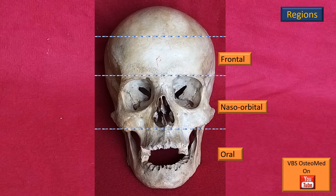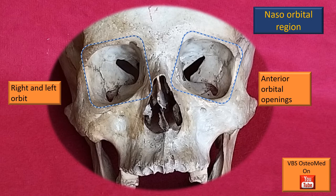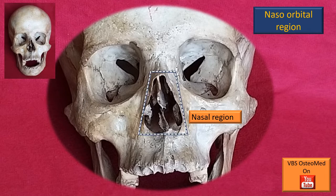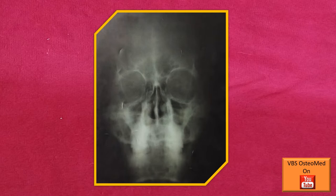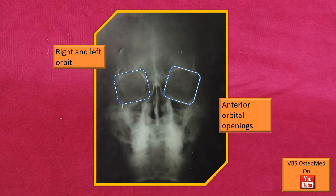Let's see an enlarged view of this region. There are three key structures: the two orbits — the anterior orbital opening, right orbit, left orbit — and a nasal region. You can see the anterior nasal aperture. Let's try to identify the same details on a normal plane X-ray. That's the nasal region, and that's the right and the left orbit — the anterior orbital openings.